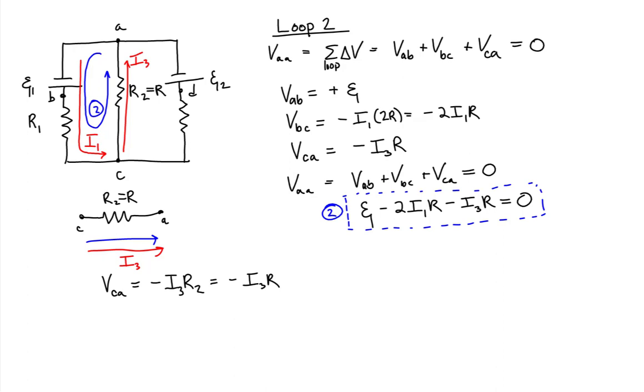We've now exhausted our independent loops for voltages. It's now time for us to use Kirchhoff's Law for current into a branch and current out of a branch.